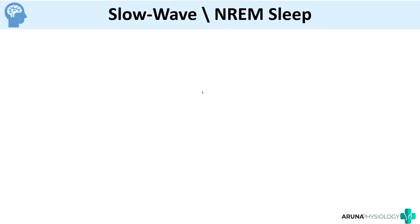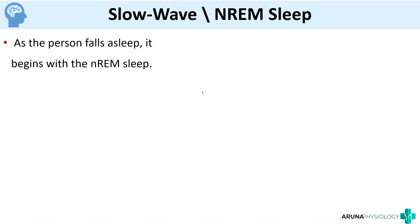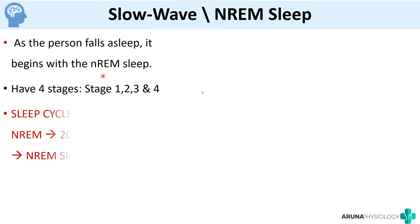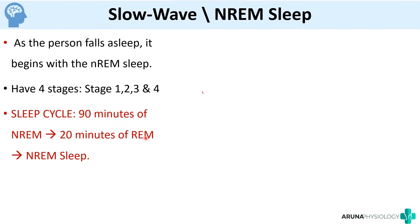Slow wave sleep is the initial part of sleep — when the person is just falling asleep. It begins with this slow wave or NREM sleep, which has four stages: stage 1, 2, 3 and 4. After these four stages of NREM sleep we have a REM sleep. The sleep cycle is: first 90 minutes of NREM or slow wave sleep, followed by 20 minutes of REM sleep, then again NREM sleep. The majority of sleep is during the NREM phase.